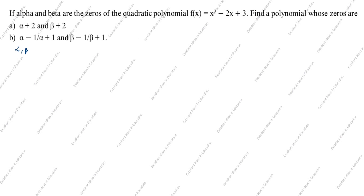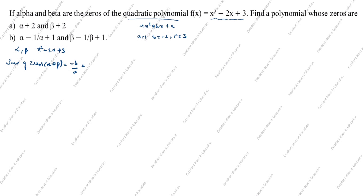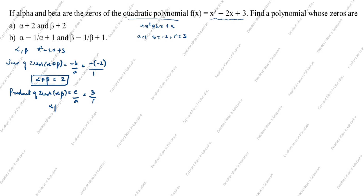What is given: alpha and beta are the zeros of the quadratic polynomial x² - 2x + 3. For the standard quadratic polynomial ax² + bx + c, a = 1, b = -2, c = 3. Sum of zeros: alpha plus beta = -b/a = -(-2)/1 = 2. Product of zeros: alpha·beta = c/a = 3/1 = 3.